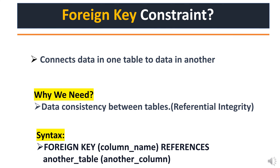Let's move to the very important constraint: the SQL foreign key constraint. The foreign key constraint is all about maintaining the relationship between tables. It connects data in one table to another and ensures data consistency across the database. In the syntax, we can see it referring to another table.